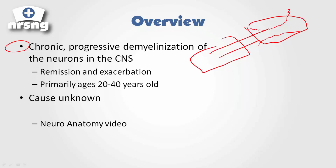You'll notice MS with remission and exacerbation. Basically the patient will have episodes of feeling okay — that would be the remission episode — and then they'll have episodes where they're in an exacerbation phase. That's one thing to keep in mind with MS, and it will be really important to help you identify MS in patients as well as on test questions.